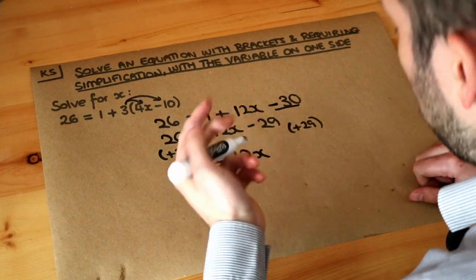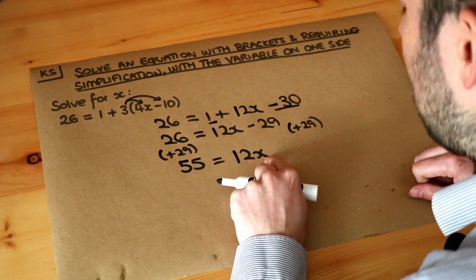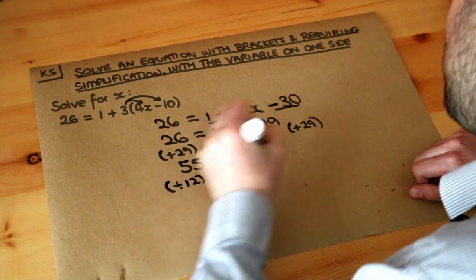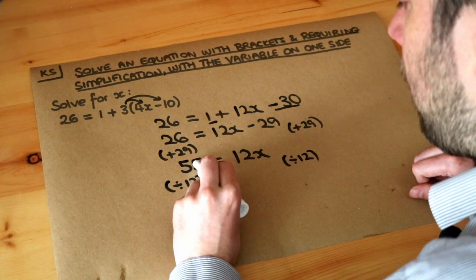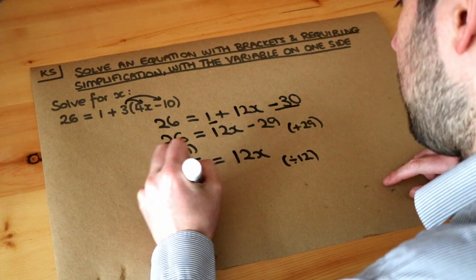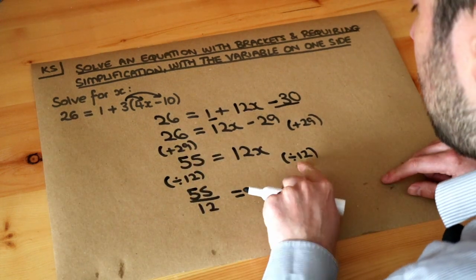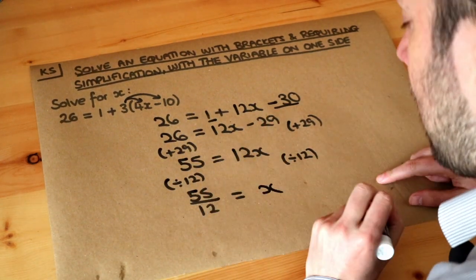And then finally, what was the last thing done to x? Well, x has been multiplied by 12. 12x means 12 times x. So we get rid of the times by 12 by doing the opposite, which is dividing by 12. So on the left-hand side we've got 55 divided by 12, 55 over 12. And on the right-hand side of the equation, the divide by 12 gets rid of the times by 12, so we're just left with x.